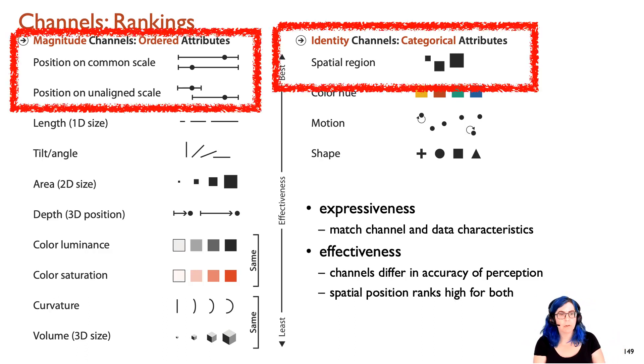A really important thing to notice here is that spatial position - that is the spatial position on a two-dimensional display - ranks very high for both magnitude and identity. We can really read off very well the idea of spatial position on the page. And also, we're very sensitive to the idea of items that are grouped together within a spatial region. We think of these as being highly related to each other.